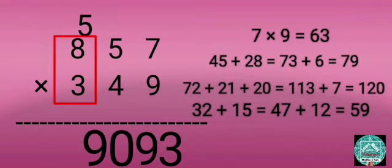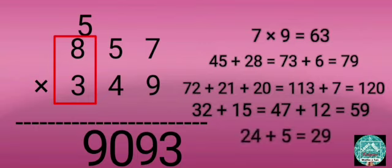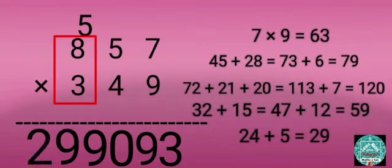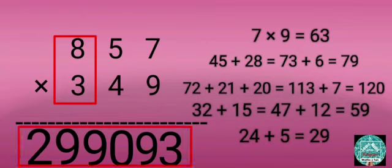Step 5: Multiply 8 by 3, then add 5 that's carried forward: 24 plus 5 equals 29. Write 29 before 9. So the answer is 299,093.